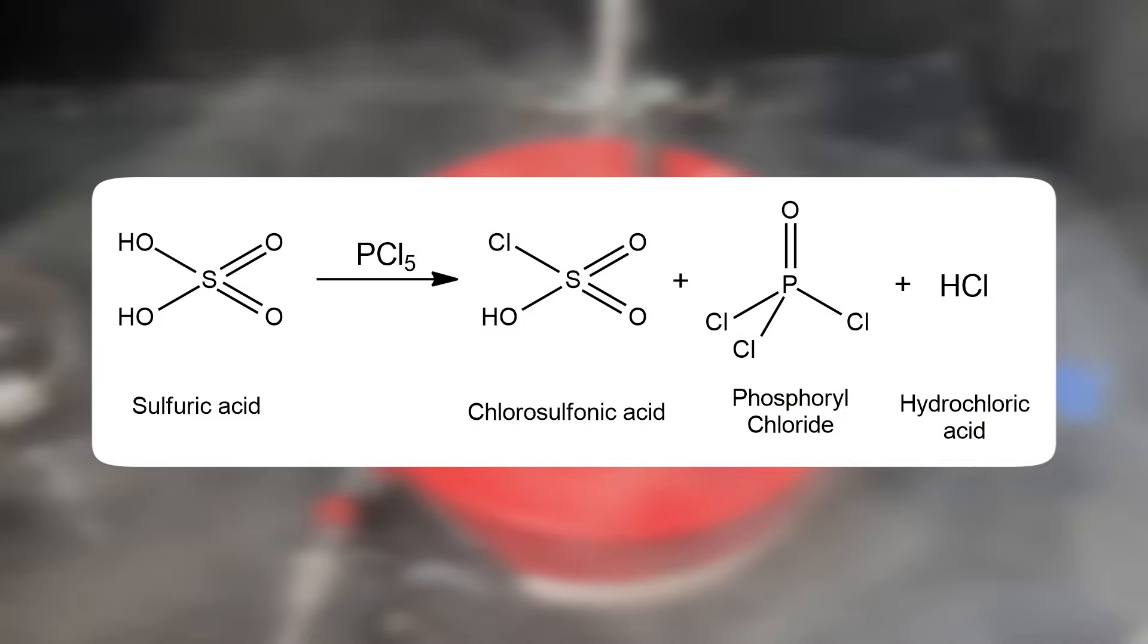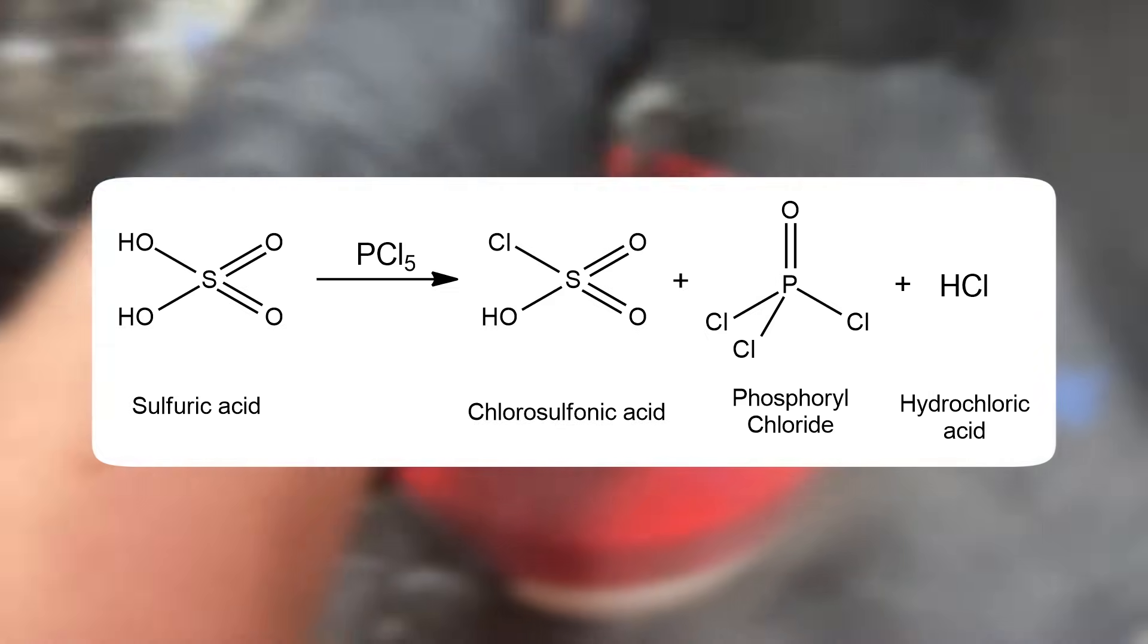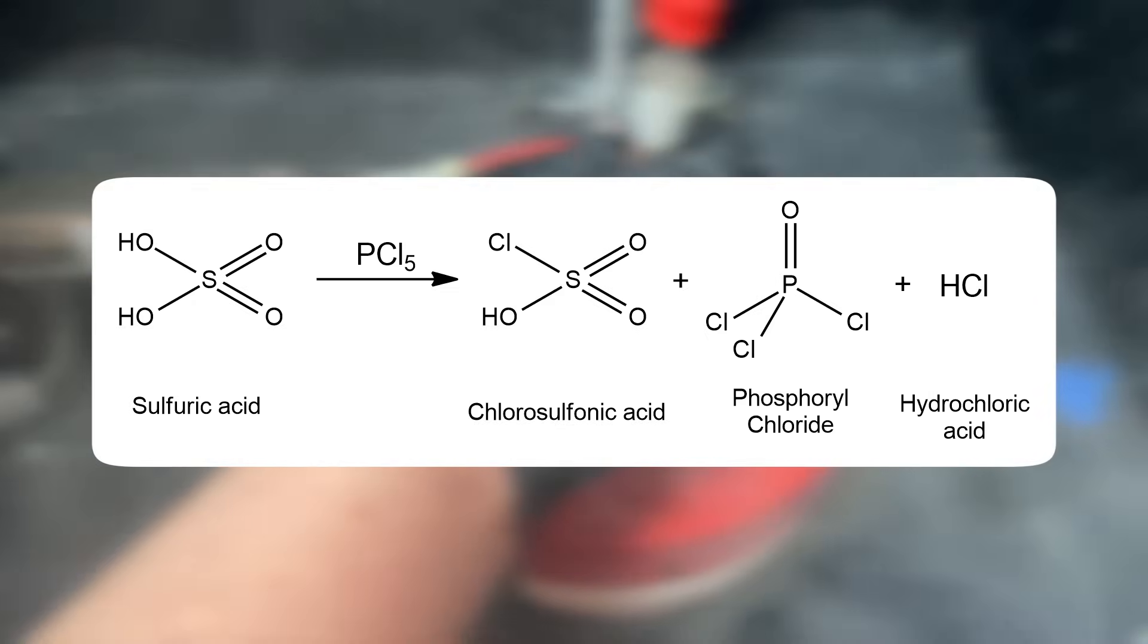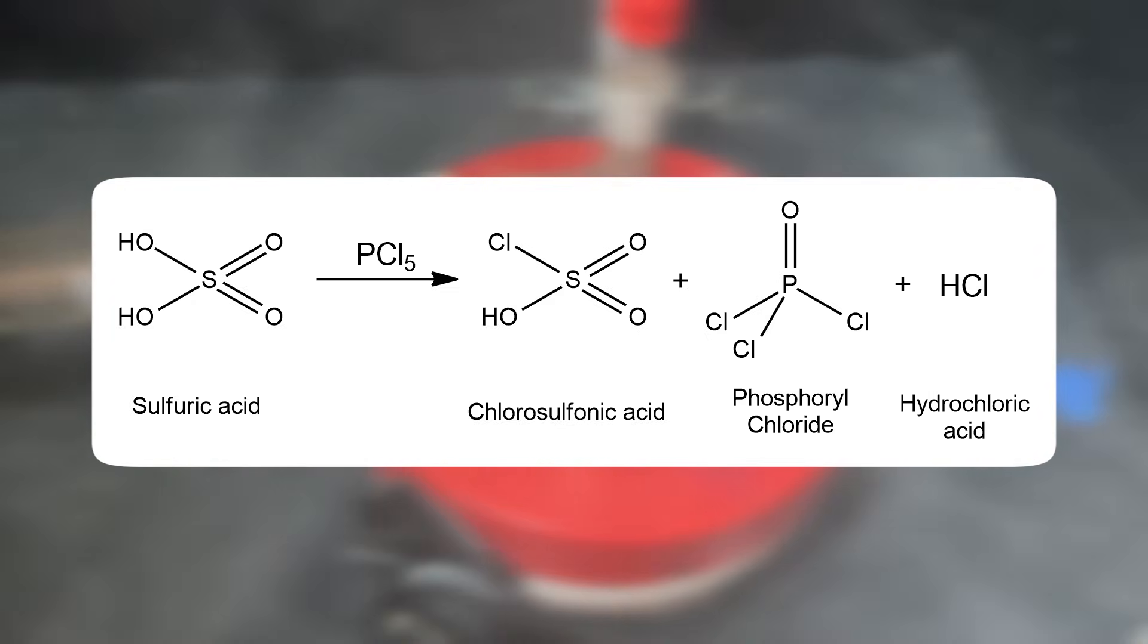Here, we're chlorinating the sulfuric acid molecule to form chlorosulfonic acid, hydrochloric acid, and phosphoryl chloride. Because HCl is a gas, it escapes into the atmosphere. And now we're left with a mixture of phosphoryl chloride and chlorosulfonic acid.